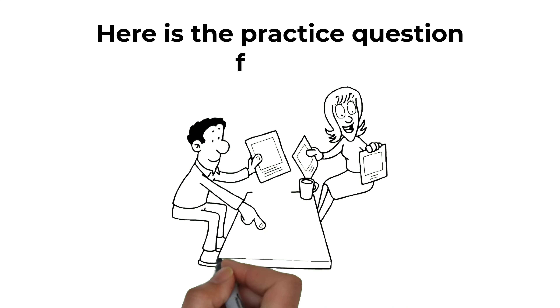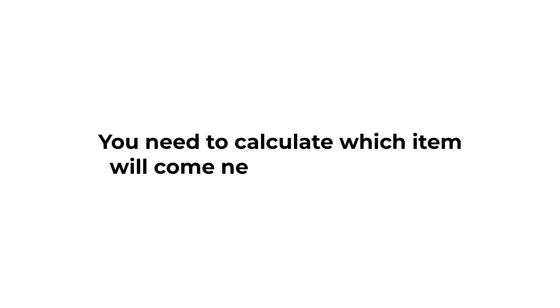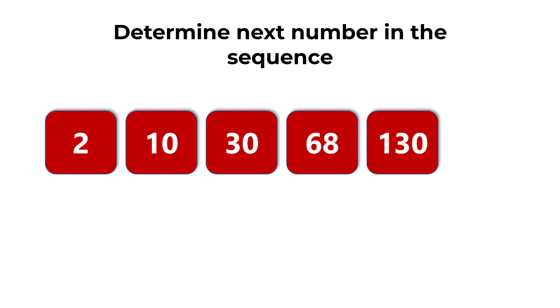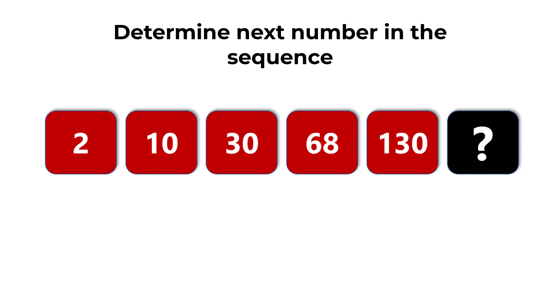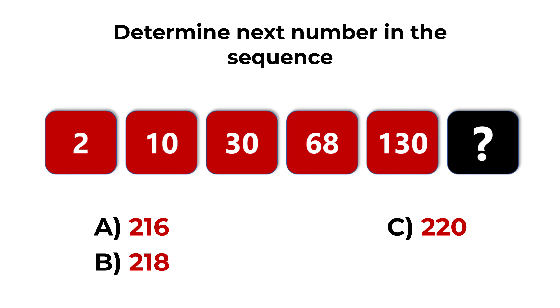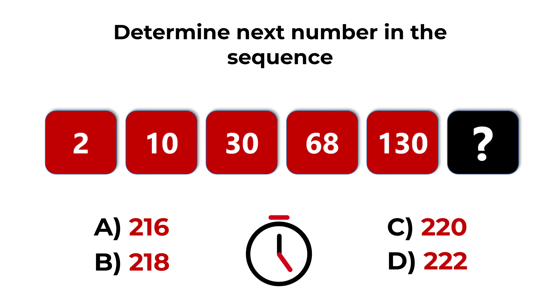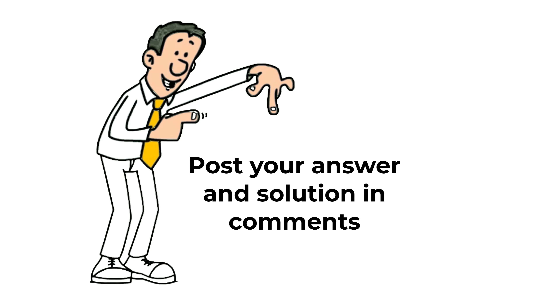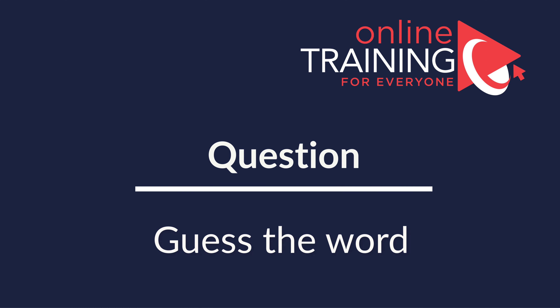Now here's a practice question: you need to calculate which item comes next in the sequence. You're presented with the series of numbers: 2, 10, 30, 68, 130 — and you need to calculate which number comes next. Choices: A) 216, B) 218, C) 220, D) 222. Give yourself 20 to 30 seconds. If you figure it out, post your answer in the comments so I can give you feedback.